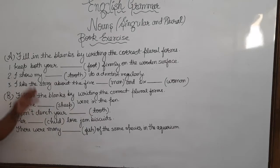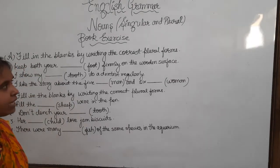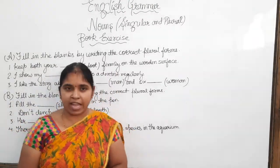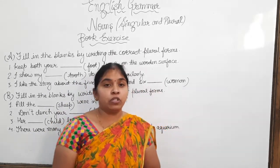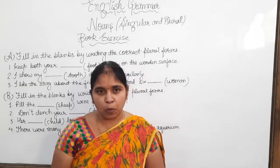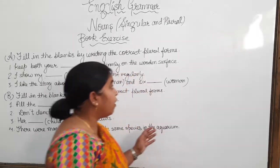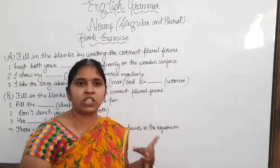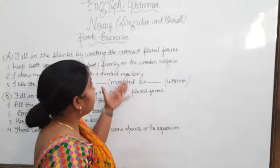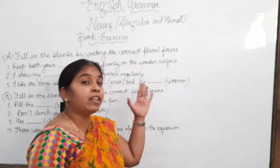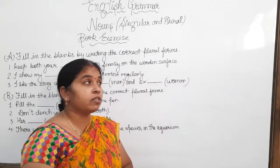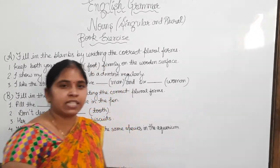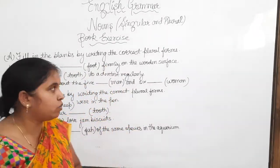The first exercise is: fill in the blanks by writing the correct plural forms. We have already learned the rules to change the singular noun into plural noun. After learning those rules, here we have to do the conversion. In the brackets, the singular nouns are given, and we have to change them into plural nouns.